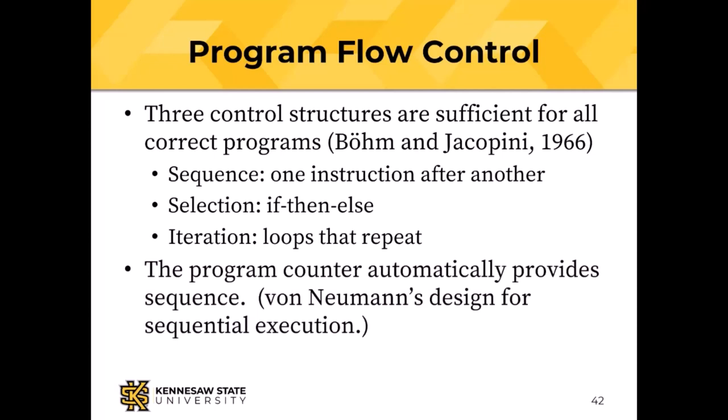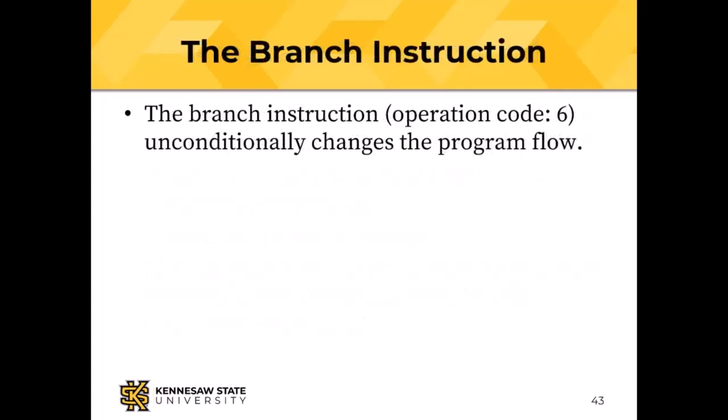The program counter automatically gives us sequence. If we fetch from the address pointed by the program counter and advance it, the next instruction will be the one now pointed to by the program counter. Branch instructions — opcode 6, the unconditional branch — cause the little man to take the two-digit address part of the instruction and jam it into the program counter, so if the address part were 50, the next instruction would be fetched from location 50.